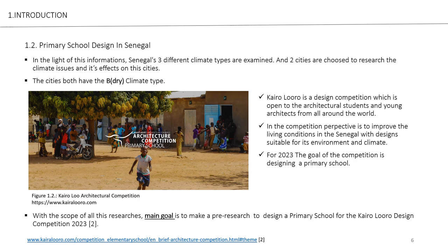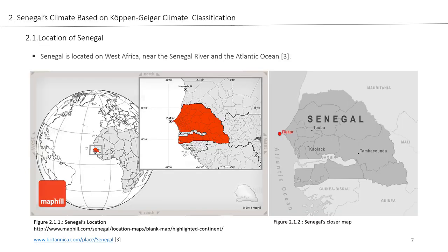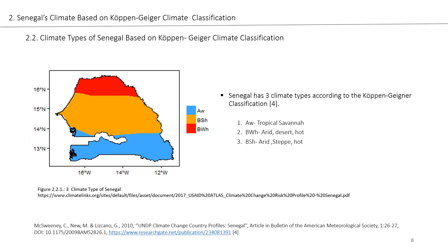Senegal is a West African country. It borders the Senegal River and the Atlantic Ocean. Senegal is divided into three climate zones according to the Köppen classification. The upper part, which is the driest and hottest, has the climate type BWH. The middle part, the arid steppe area, has the climate type BSH. And the lower part, the tropical areas, has the AW climate type.